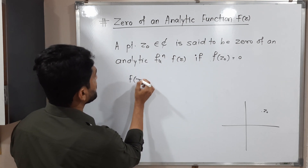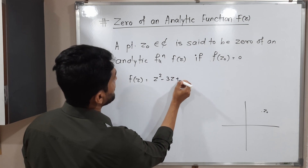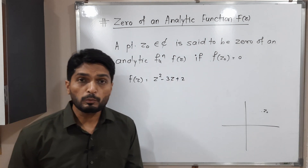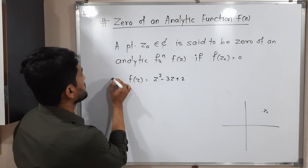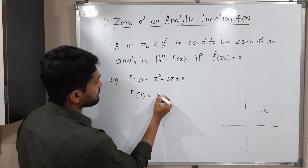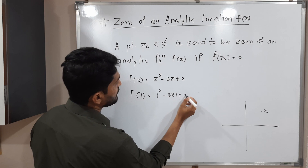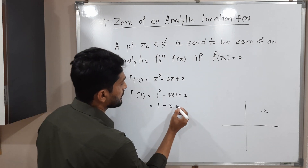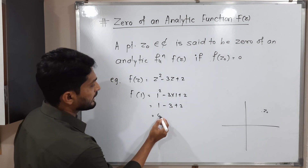Suppose f of z is equal to z square minus 3z plus 2. I am going to put z is equal to 1. Let us see what will happen. If I put z equal to 1 in place of z: 1 squared minus 3 into 1 plus 2. 1 squared is 1, 3 into 1 is 3, and plus 2.